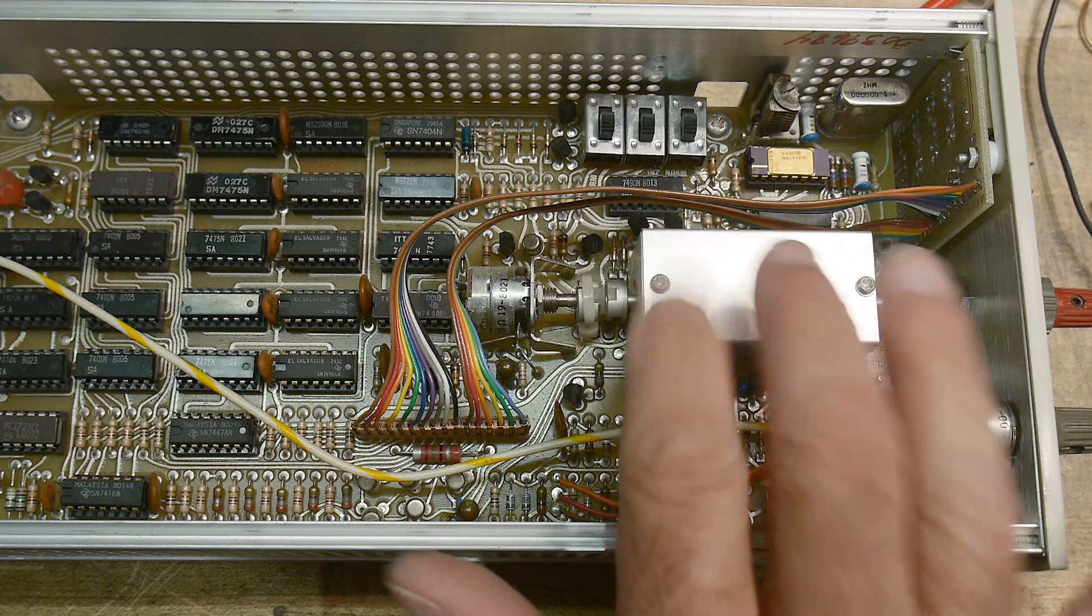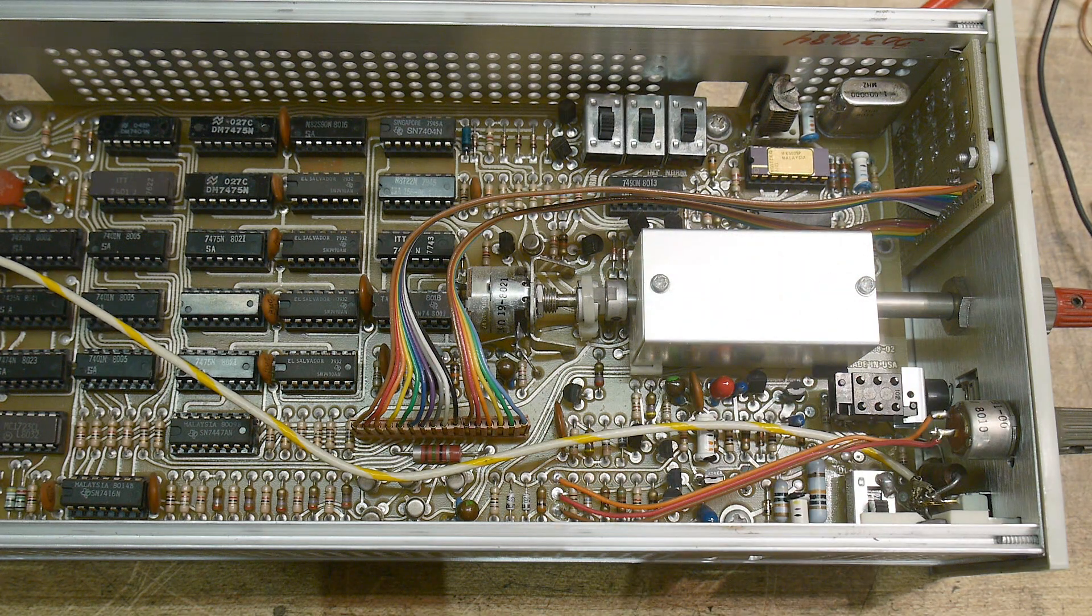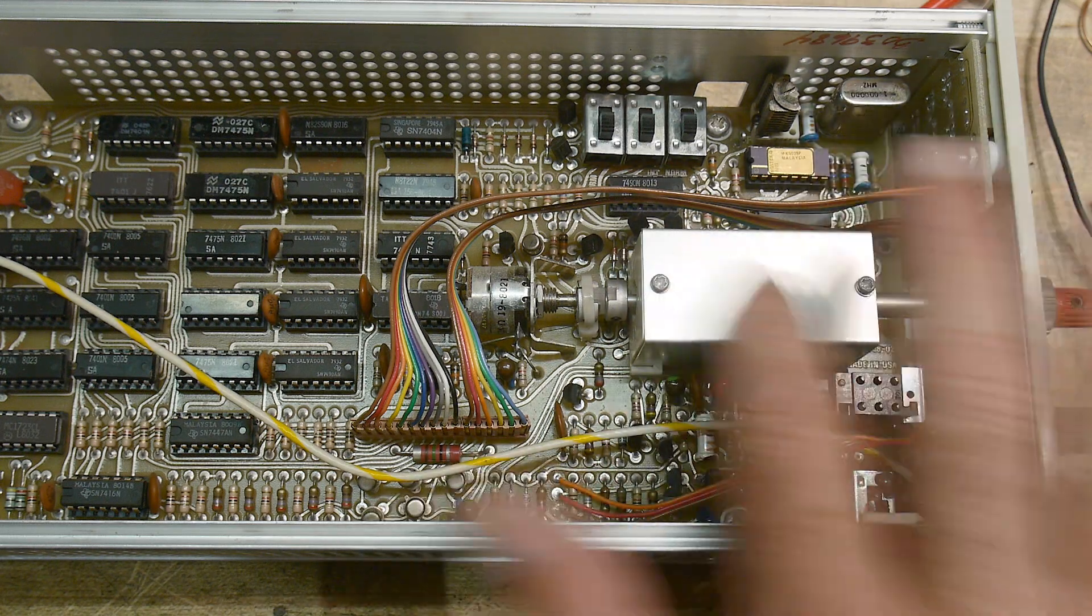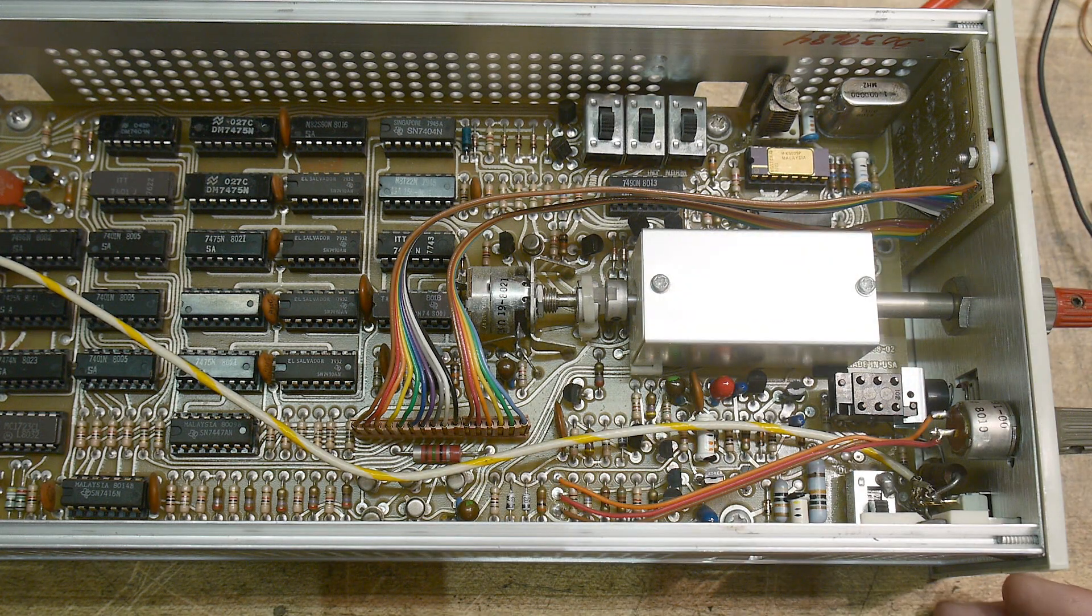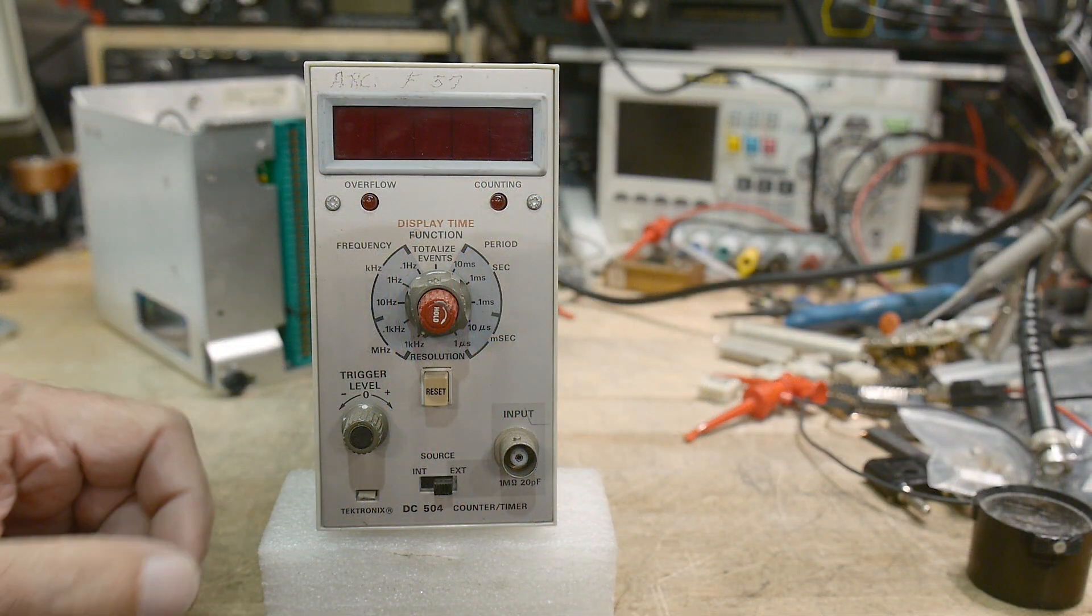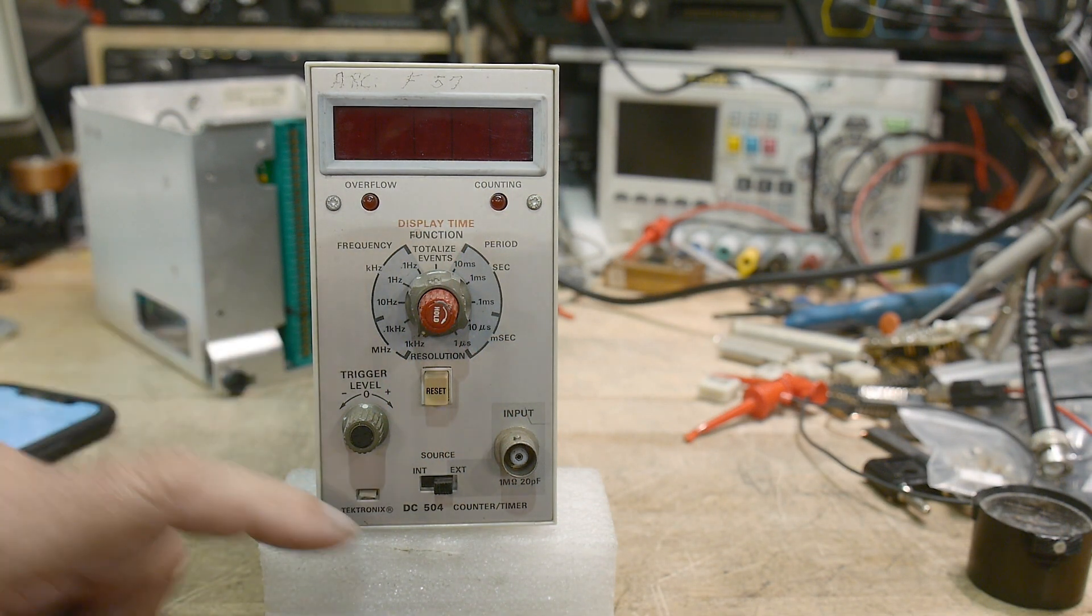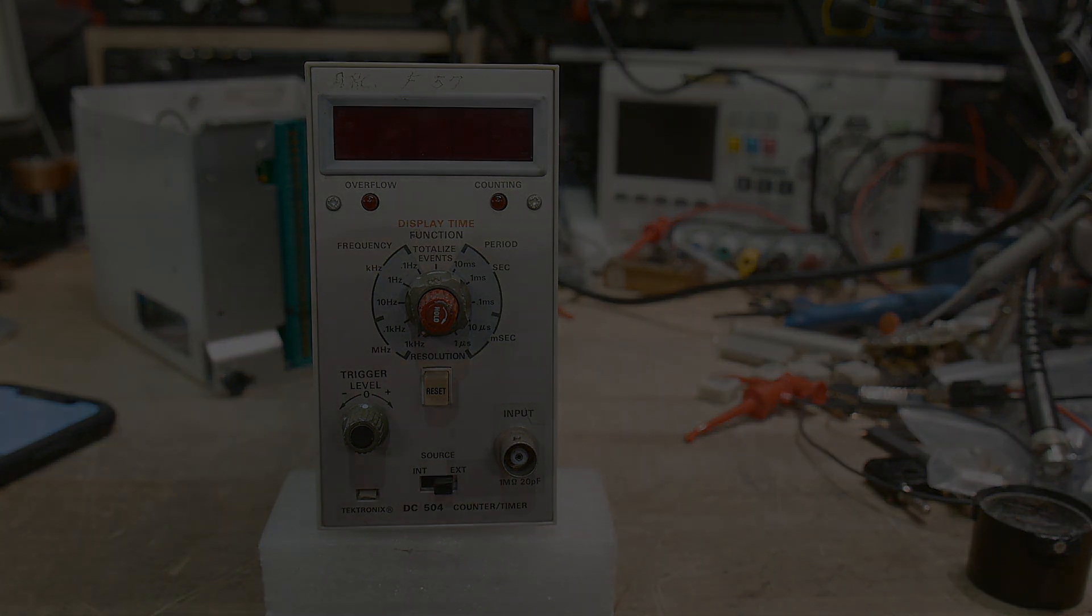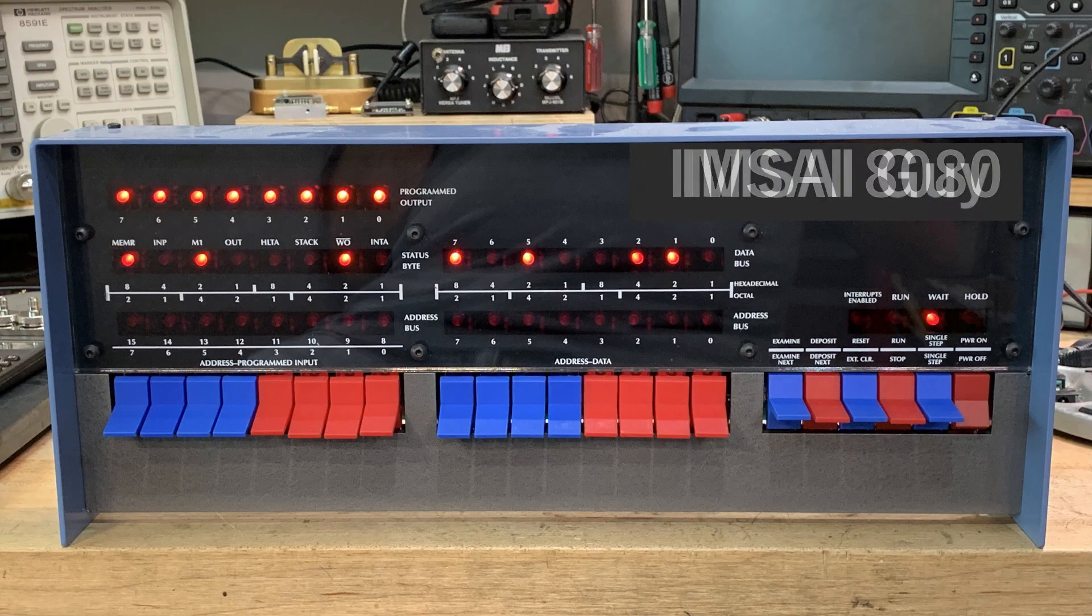And some kind of little switchy thing here. Probably the classic Tektronix little fingers on a PC board type of switching down here. But there you go. So, one more plug in for the collection. This is a DC 504 counter timer.